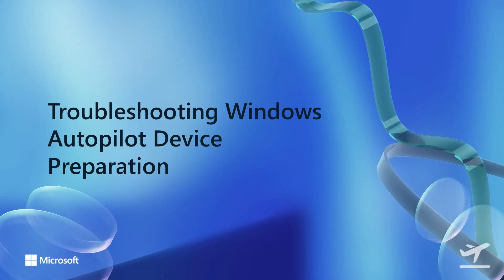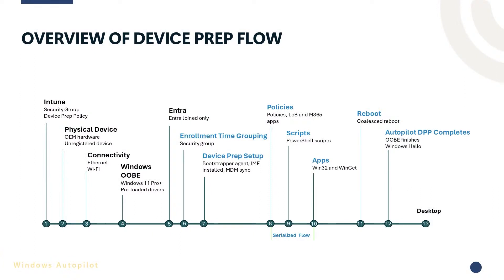Now let's move to troubleshooting Windows Autopilot device preparation. This is a new solution introduced recently, and many aspects of it are still not known to many customers, so we wanted to take a minute and go over the flow step by step. The first four steps are the prerequisites — things you need to make sure are set up before you start your deployment. The admin will set up their device security group and include that in the device preparation policy. The device preparation policy also specifies which apps you want delivered during the OOBE onboarding process.